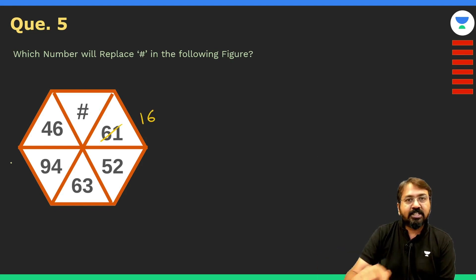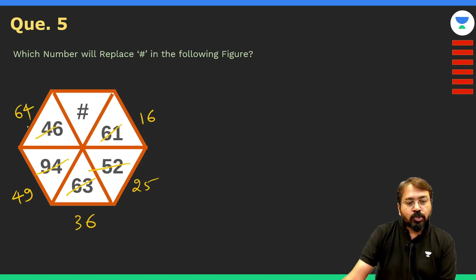Yes, the logic was something like this: you just had to flip the digits. So when you reverse the digit of number 61 it will become 16, this will become 25, this will become 36, this will become 49, and this will become 64.